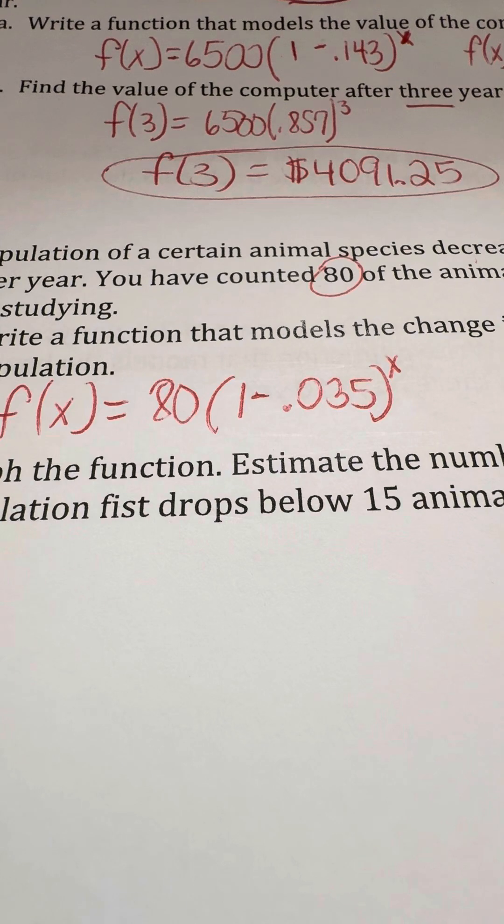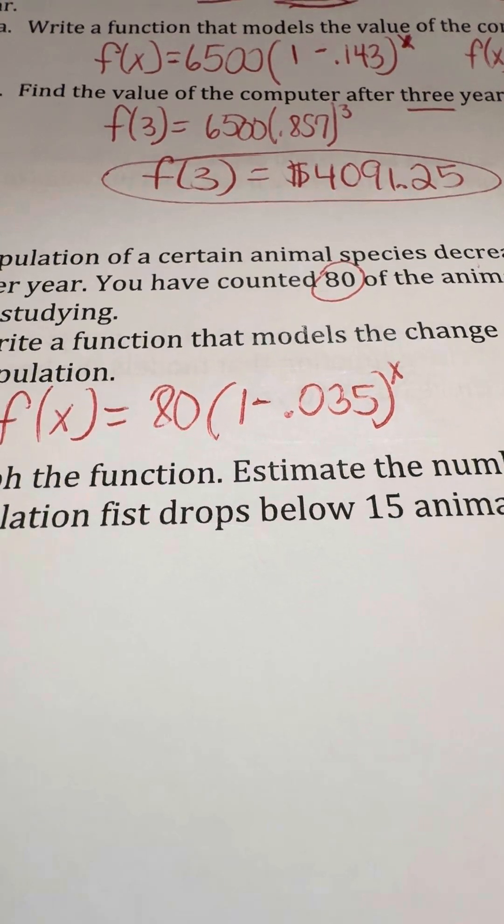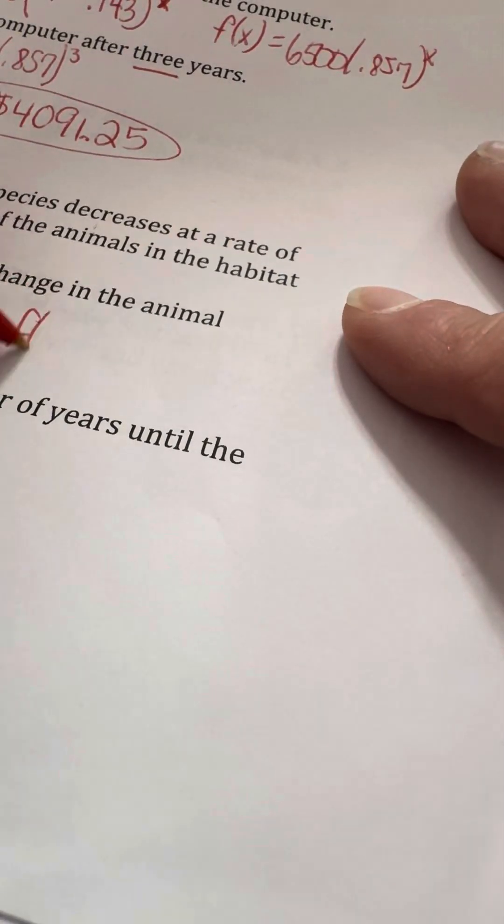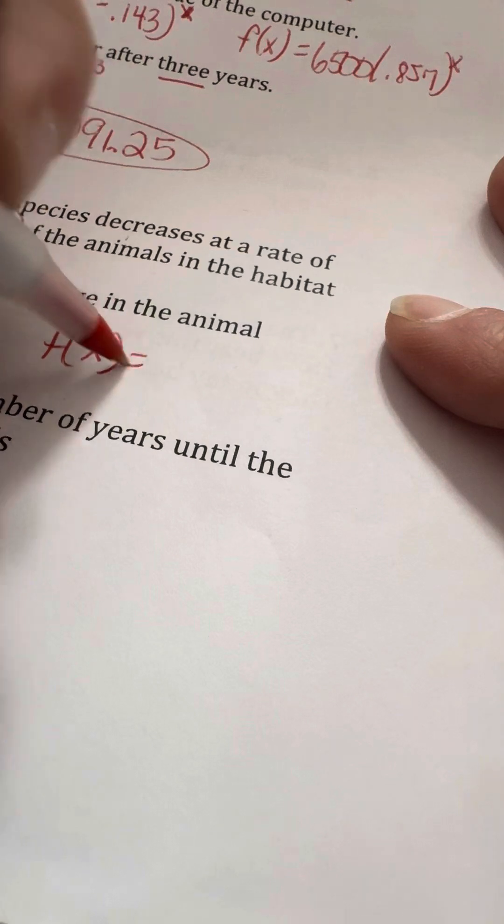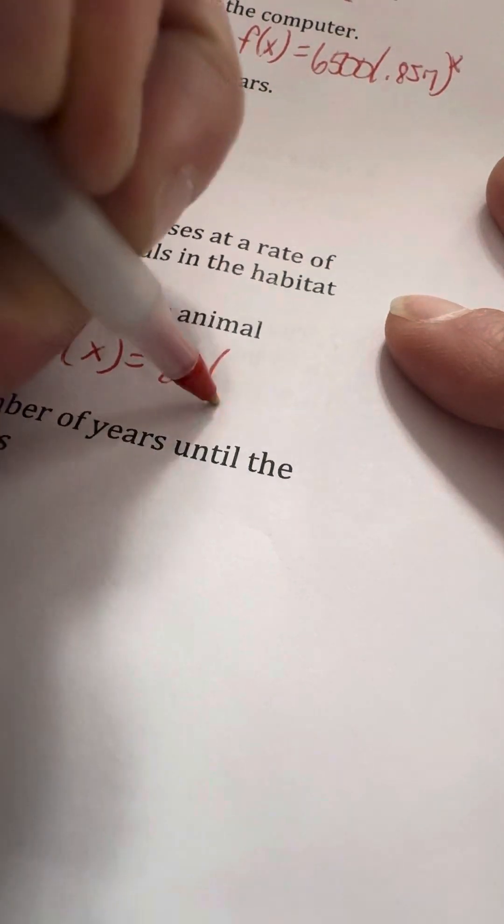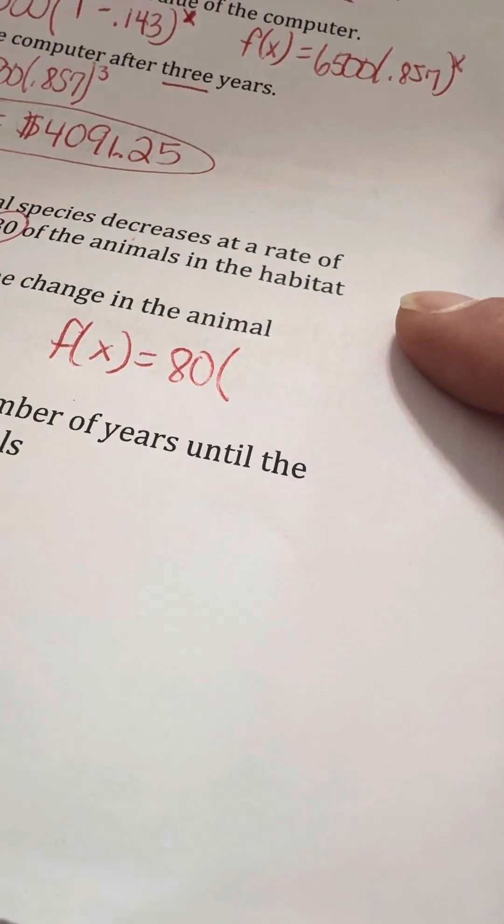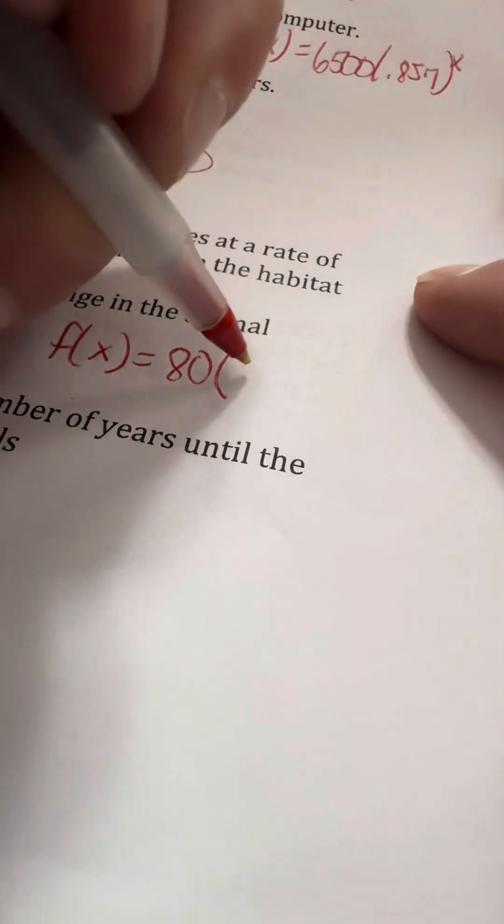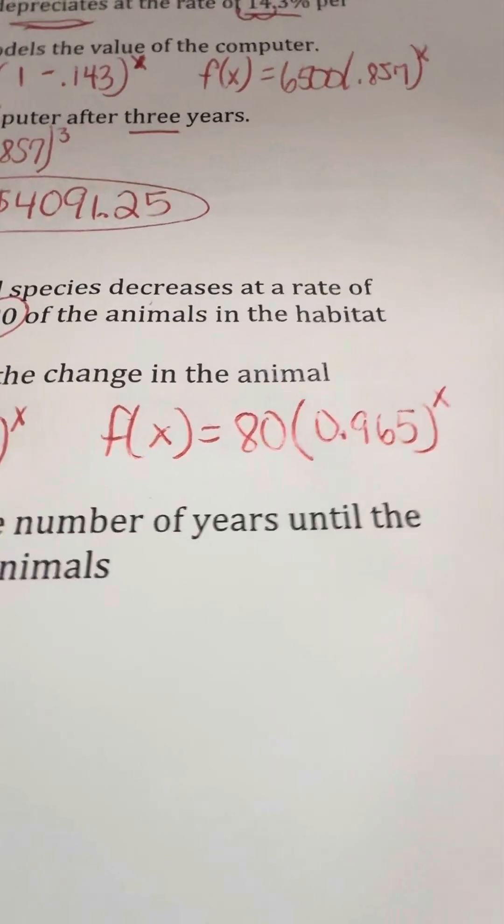I am going to clean this up, make it a little bit neater so it's less stuff on it. So after I do the subtraction, it's going to be f of x is equal to the 80 animals. After I do the subtraction of 1 minus the 0.035, you are left with 0.965. And that's going to be to the x exponent. So that's the function.